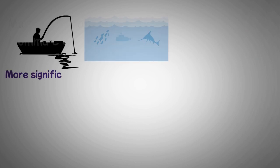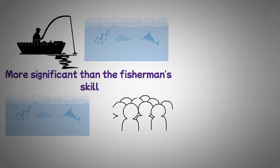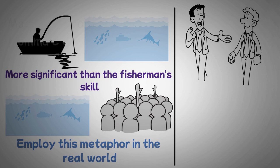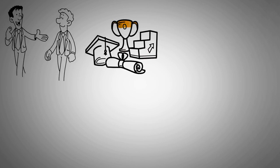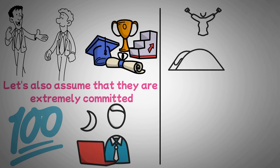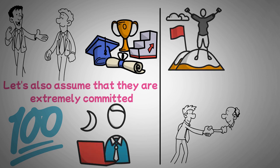He is saying that a fisherman must fish in areas where there are lots of fish if he wants to capture a lot of them. Even more significant than the fisherman's skill is the mere presence of fish in the water. Anyone who wants to succeed can employ this metaphor in the real world. We'll use Tom and Peter, two fictitious characters, as examples.